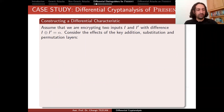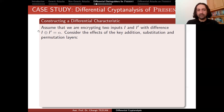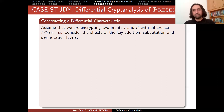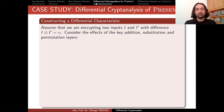Assume that we are encrypting two inputs, i and i', with difference alpha. This means alpha is the difference you introduce — it might be a single bit flip or more than one bit flip. Once you XOR i with alpha, you obtain i'. In differential cryptanalysis we are working on two inputs, not one. They are very related: their XOR is just alpha, which is most of the time a lot of zeros and a few ones.